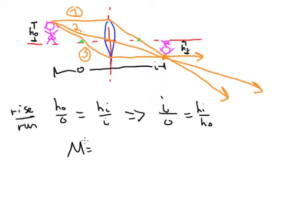This is going to be the magnitude of the magnification, how much the image is either stretched or compressed. Since this gets inverted, we'll get a negative sign. The magnification M equals negative i over o, or negative h_i over h_o.